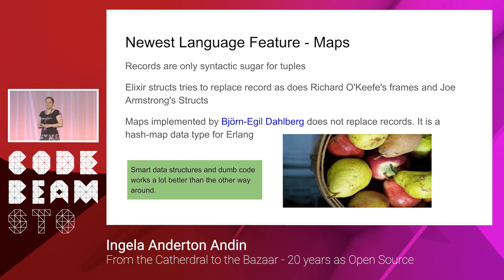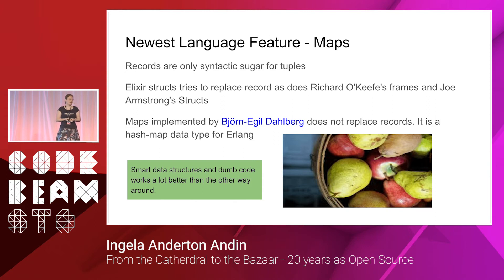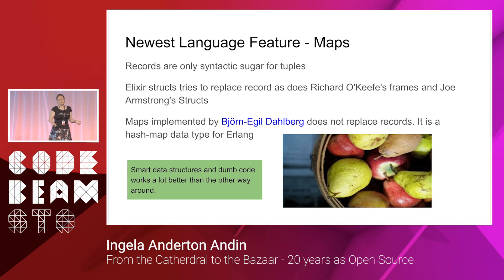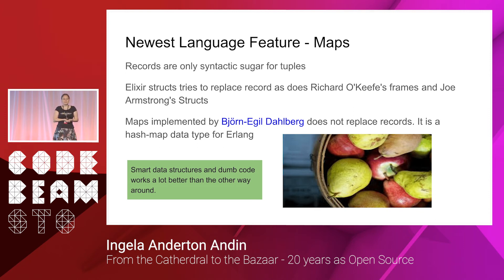On the topic of legacy, many people don't like records, and I think the main problem is that they're just syntactic sugar for tuples. There are many proposals to replace records, like Elixir structs. But the maps implemented by Björn-Egil Dahlberg do not replace records — it's a hash map data type for Erlang. The rationale is that it would be much more valuable to add something to Erlang that was missing than to try to replace records that we can never get rid of anyway because of legacy. Nowadays I use maps quite a lot, but I haven't replaced all my records with maps. Please use the smart data structure that solves your problem and don't compare apples to pears.